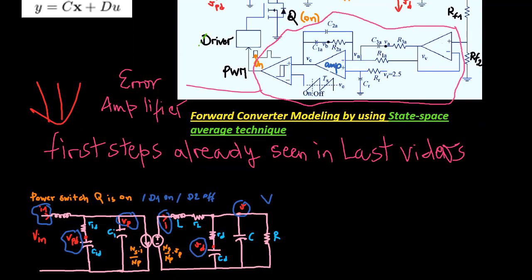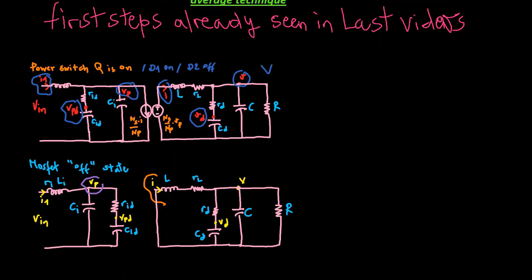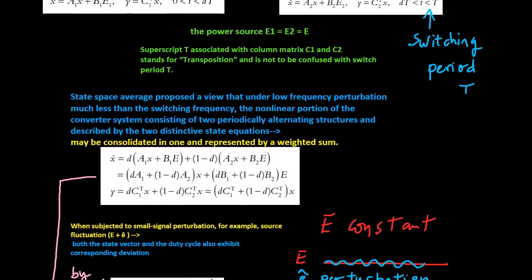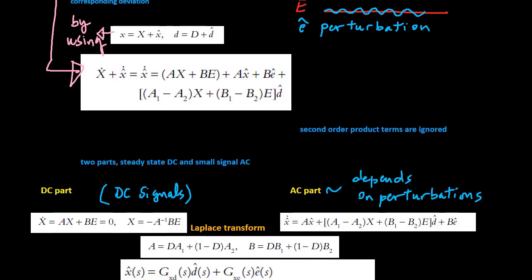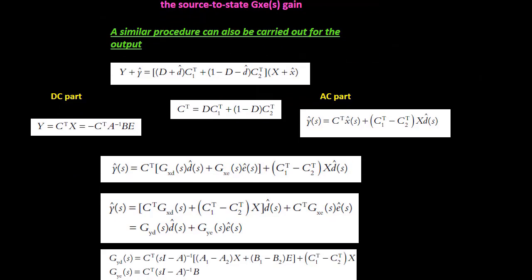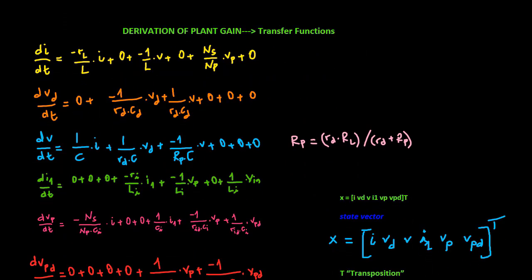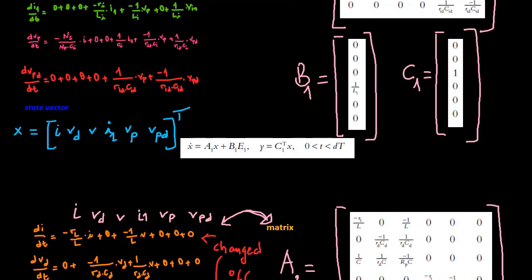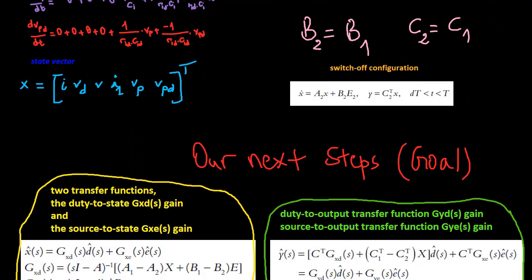The theory of state space averaging applied in the switch mode power converter was conceived in the early 1970s and well developed in the early 1980s. Dr. Middlebrook and his then graduate student Dr. Kuk were credited with the concept and techniques associated with it. Therefore, the switch mode converter models generated on the basis of the theory have often times been named Middlebrook models.